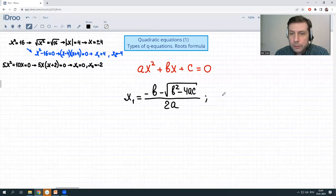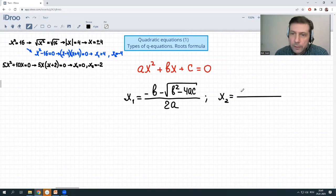Second root, x2 is equal to the same fraction almost. A bit different. Again, negative b plus square root b squared minus 4ac. Things on the root are the same. And over 2a again.